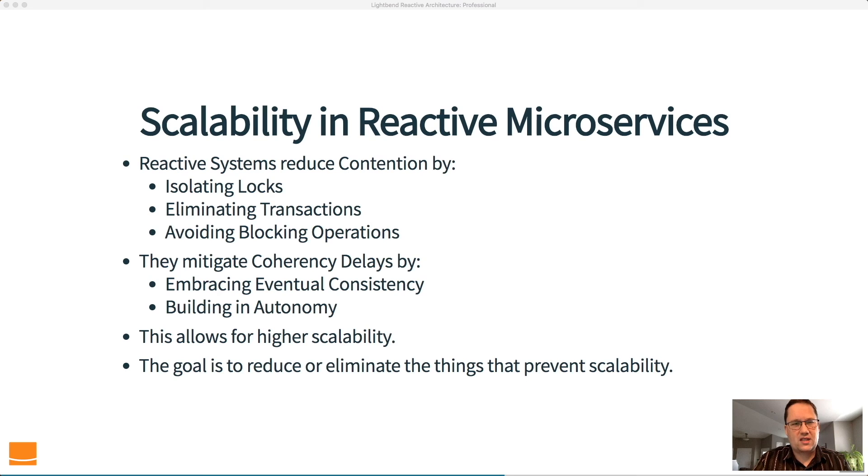If we have more autonomous systems, then we don't have to have that communication going back and forth all the time. And reducing that communication then reduces the amount of coherency delay that we have to deal with. So that allows us to avoid that problem as well.